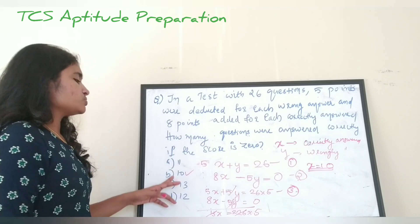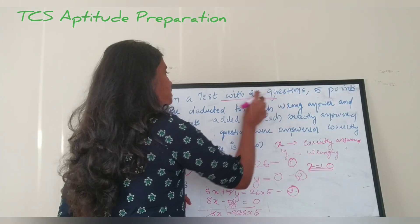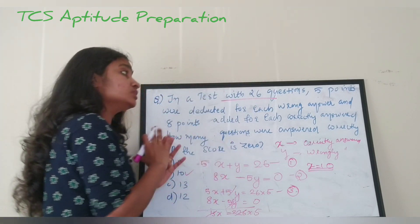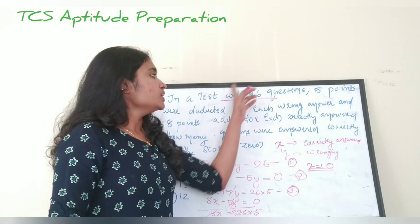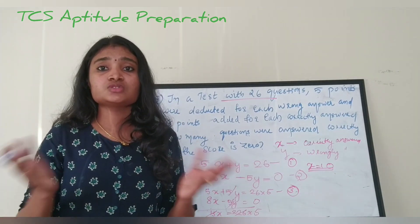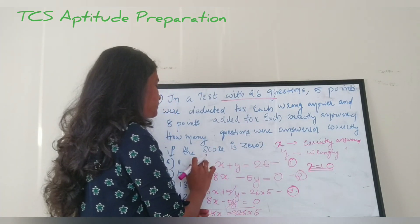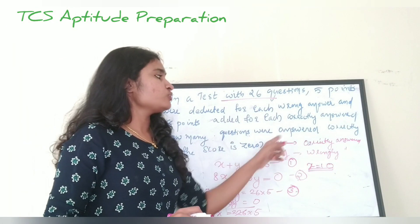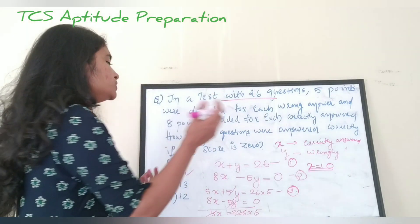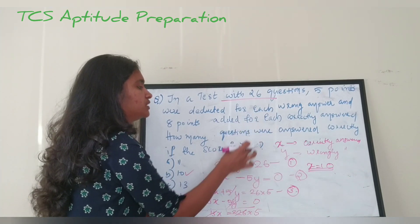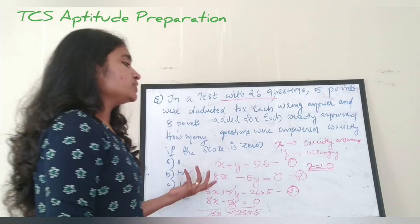The correct answer is option B: 10. To recap, we formed two equations: one from the total 26 questions (x plus y equals 26), and one from the scoring rule (8x minus 5y equals 0, since the total score is zero). Solving these two equations gives the number of correct answers as 10.